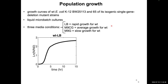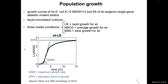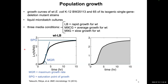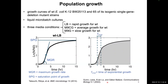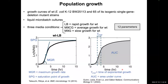We measured the OD of liquid micro-batch cultures over time for all three media conditions and all mutants. From these growth curves, we can measure different parameters: maximum growth rate, saturation point, T-exponential (time the growth is in exponential phase), and AUC (area under the curve). Overall, we had four parameters across three conditions, giving 12 parameters per mutant.